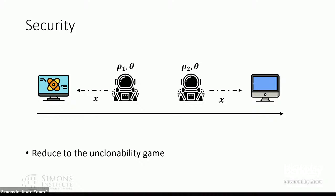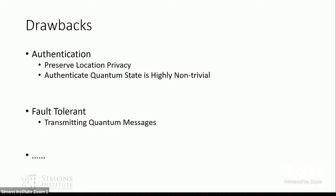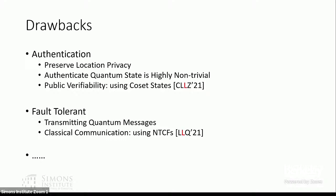There are drawbacks to this scheme. First, it is hard to authenticate a quantum state, so there might be malicious verifiers trying to steal location information about the astronaut. Second, transmitting quantum messages — sending BB84 states — is expensive and has a high error rate, so we want the protocol to be fault tolerant. We address the first problem using coset states, which provide public verifiability that BB84 states do not have.